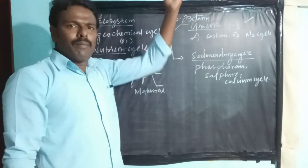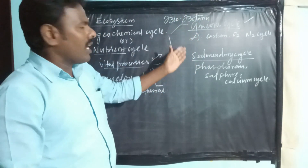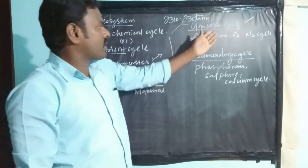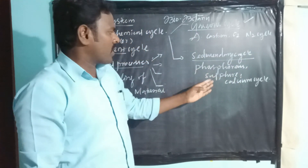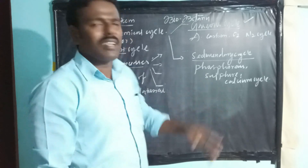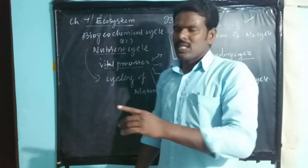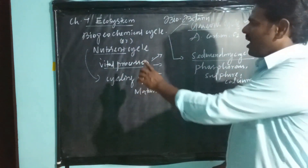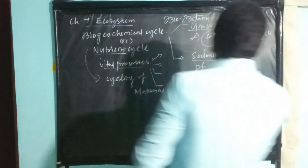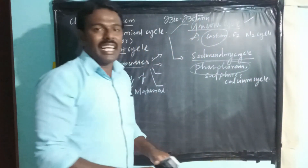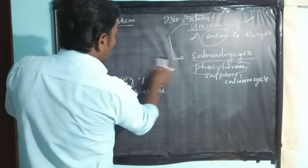Already in previous classes, students have read about the gaseous cycles — carbon, oxygen, nitrogen — and the sedimentary cycles — phosphorus, sulfur, and calcium. Therefore, in this lesson, only the carbon cycle and the phosphorus cycle will be explained.